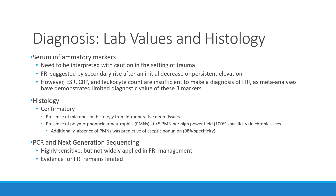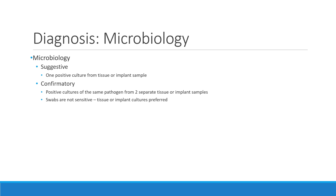Infection PCR and next-generation sequencing are highly sensitive but not yet widely applied in the clinical setting for FRI management, so evidence for their use remains limited. In terms of microbiology, one positive culture from a tissue or implant sample is only considered suggestive, as it could represent a contaminant. What is confirmatory is having positive cultures of the same pathogen from two separate tissue or implant samples, taken intraoperatively. Swabs are not considered sensitive enough and are typically not used; deep tissue and implant cultures are preferred.